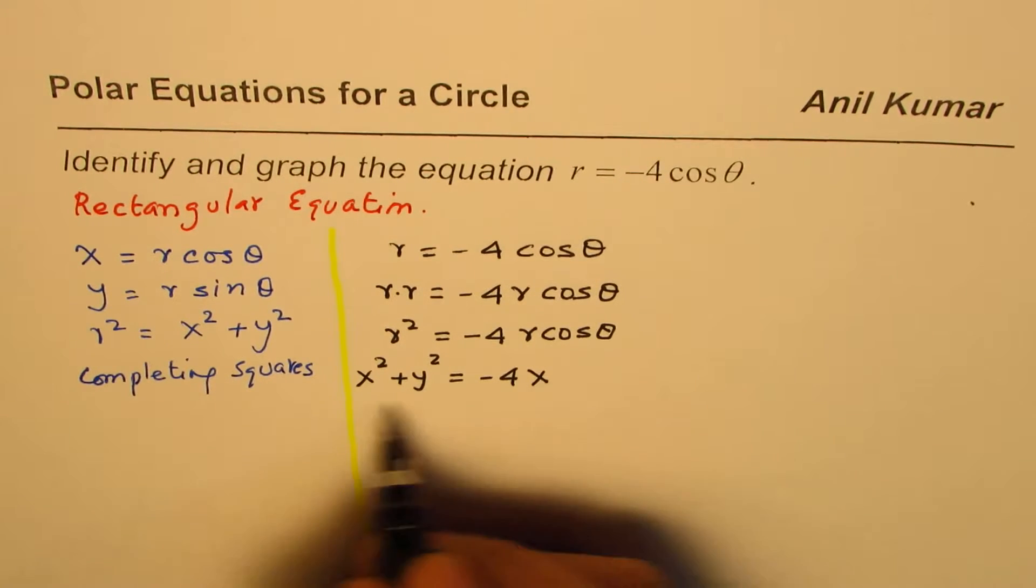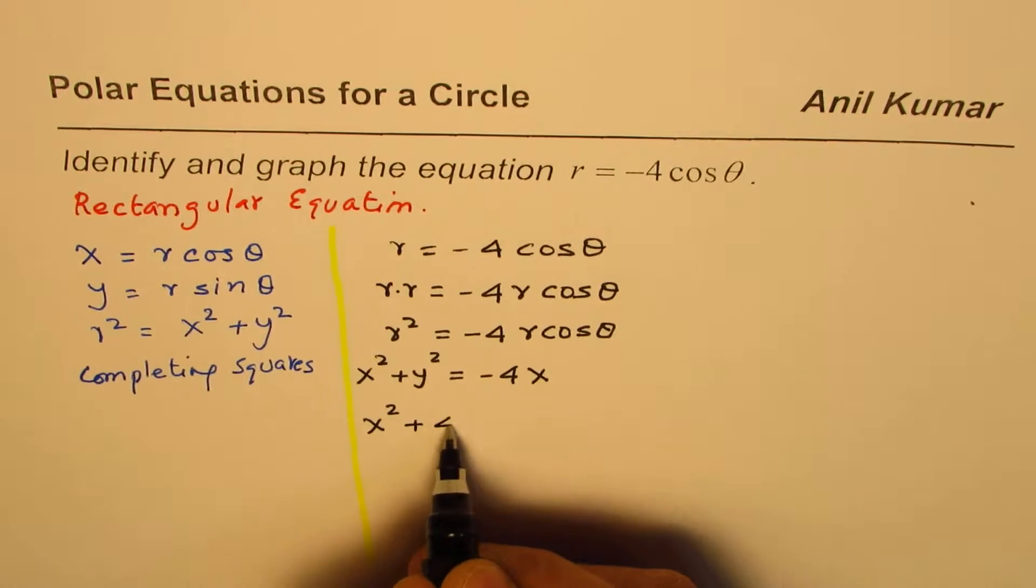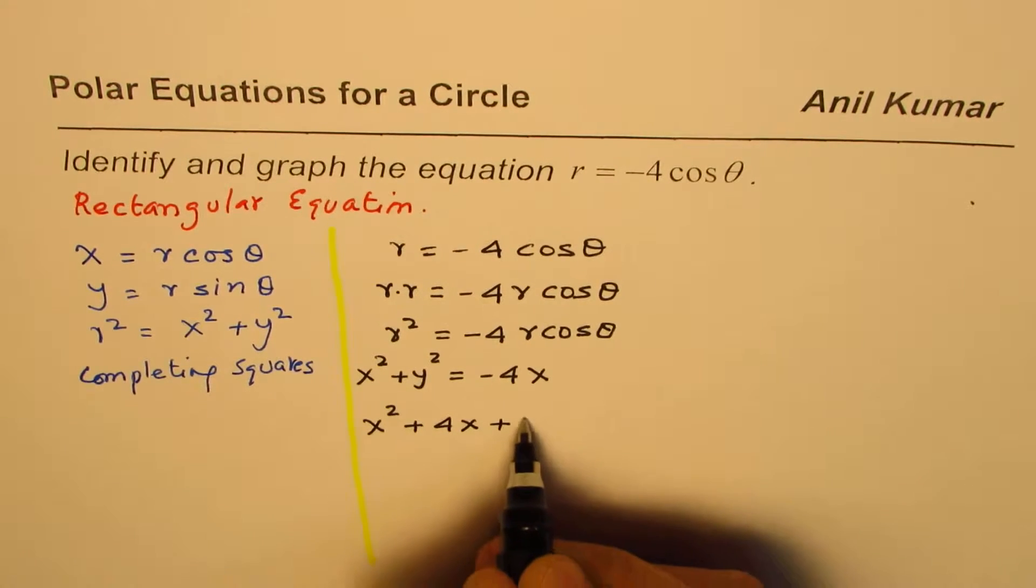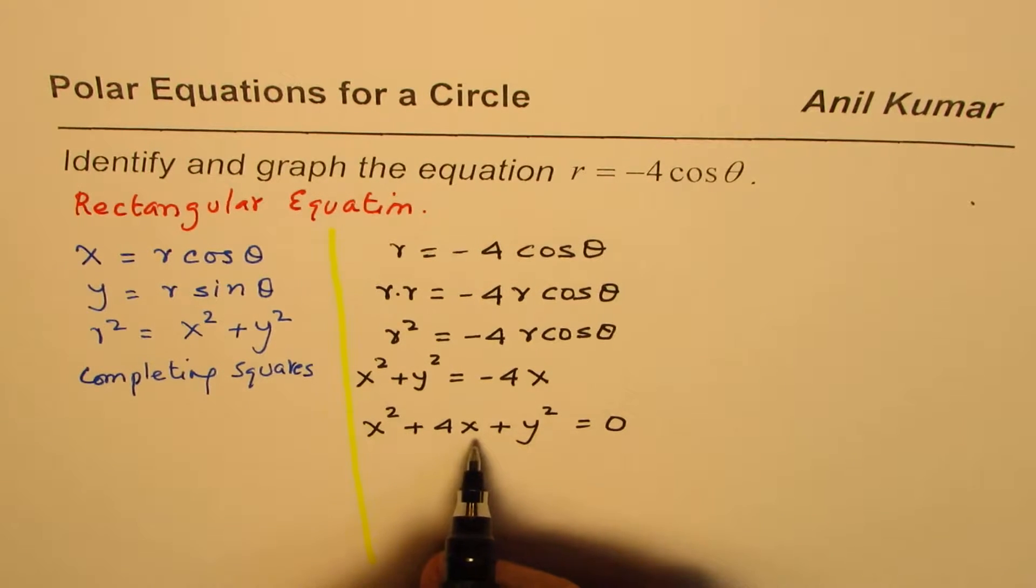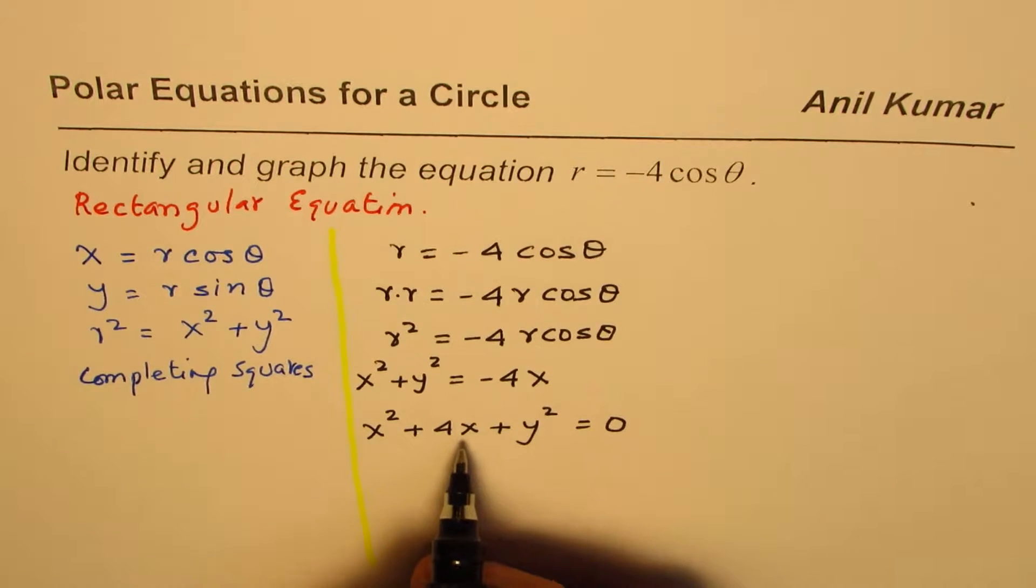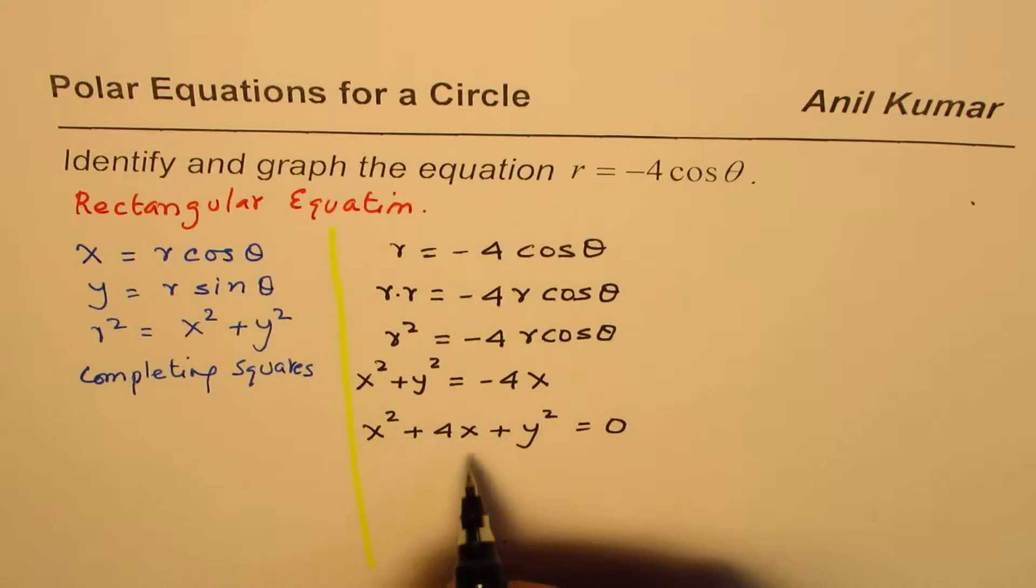Bringing minus 4x to the left side gives us x squared plus 4x plus y squared equals 0. Now, here we can have a perfect square by completing the squares. x squared plus 4x, half of 4 is 2. So, we'll add and subtract 2 squared, which is 4.